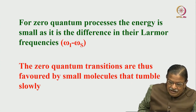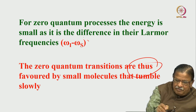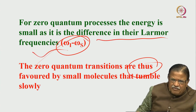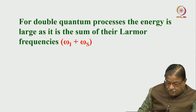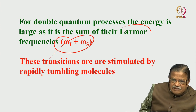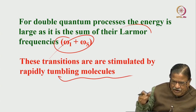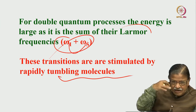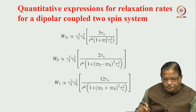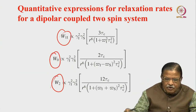Zero quantum transitions are favored by small molecules. The zero quantum process energy is small — it is the difference in Larmor frequencies. For double quantum transitions, the energy is the sum of the Larmor frequencies ω_i + ω_s. These transitions are stimulated by rapid tumbling at ω₂, which equals the sum of the Larmor frequencies. If the resonating frequency is 500 MHz, W₂ is almost 1 GHz. We can derive expressions for ω₁, ω₀, and ω₂, all three.